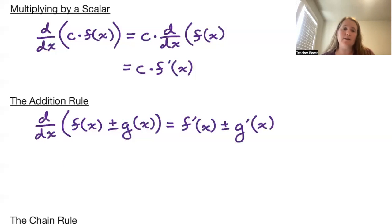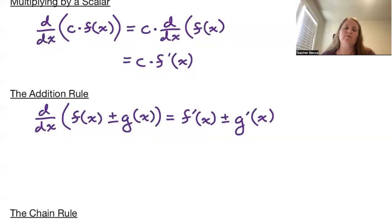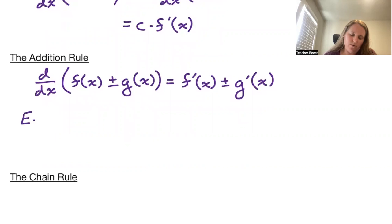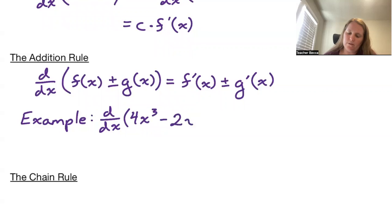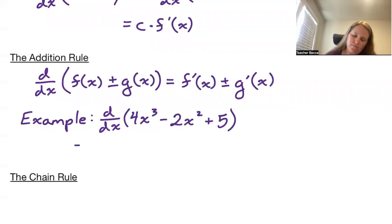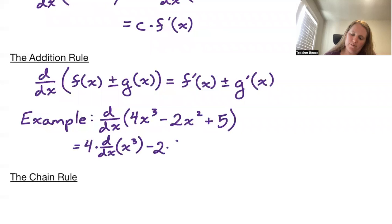Putting these two rules together, along with the power rule, we can take the derivative of any polynomial. For example, if we wish to take the derivative of 4x cubed minus 2x squared plus 5, this is equivalent to doing 4 times the derivative of x cubed, minus 2 times the derivative of x squared, plus the derivative of 5.